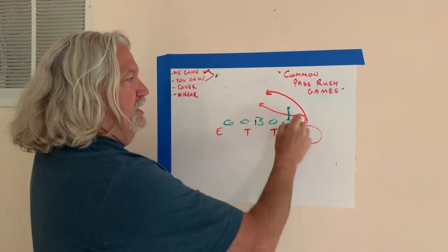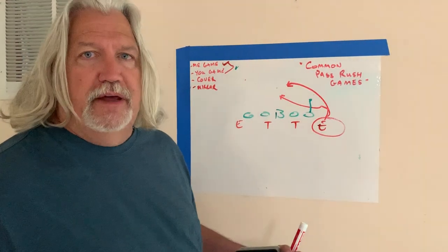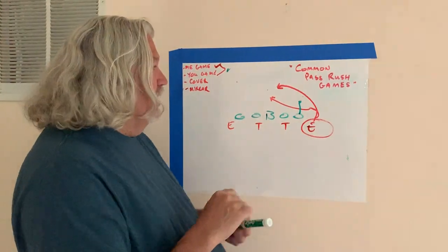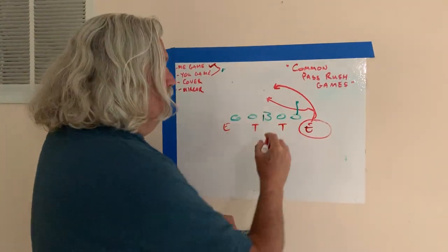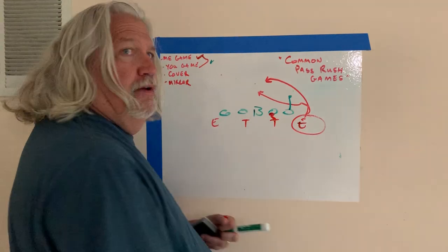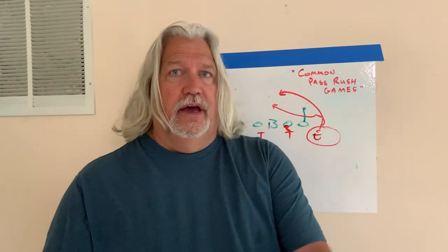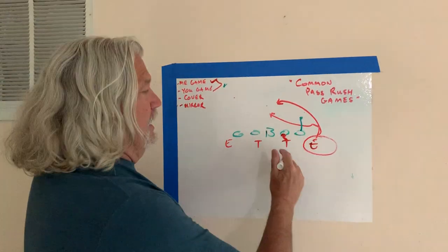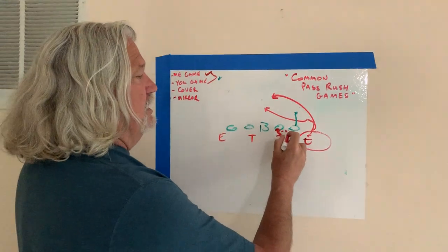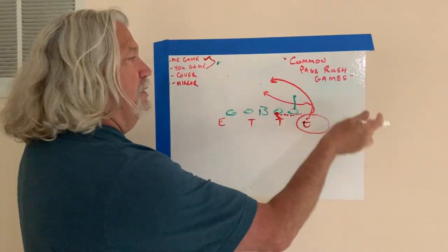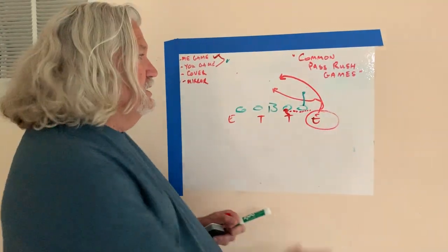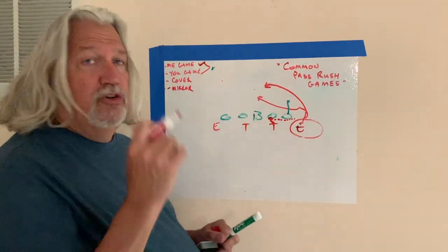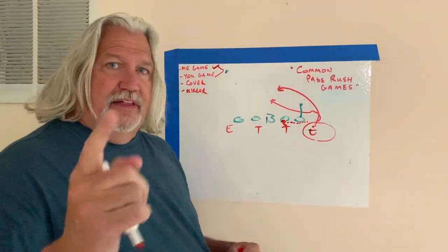He can beat him around the horn. He can beat him up and under. He can spin move. He can do anything he wants. The tackle will hit the guard, get separation, and allow his end to go for the sack. He will act as a contained player if the quarterback goes up and over. So that's cutting the end loose, giving him a two-way go on the offensive lineman. That's called a cover.